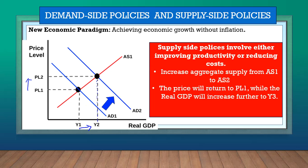The supply side policies mean we increase supply. There are two ways: improving productivity — meaning employers produce more using the same resources — or businesses can reduce costs. If we apply these supply side policies, the supply curve shifts to the right from AS1 to AS2. The demand side policies shift the demand curve right, and the supply side policies shift the supply curve right. The result is a new, even higher output — let's call it Y3.